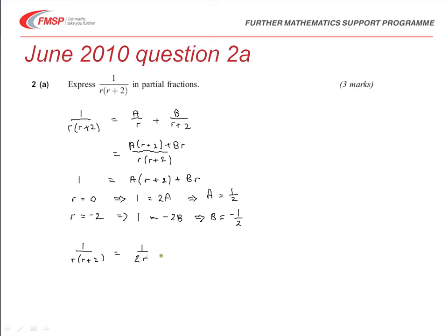minus, because b is negative 1 half, 1 over 2(r+2).